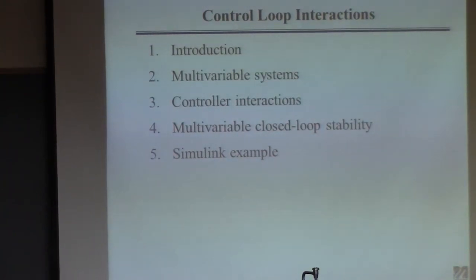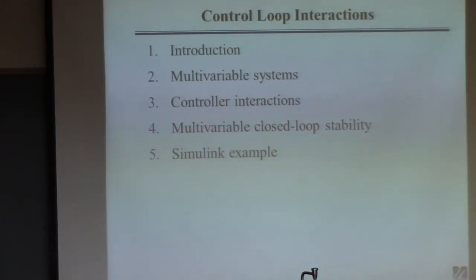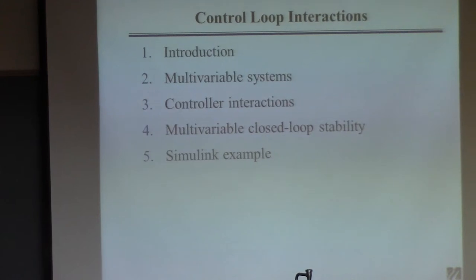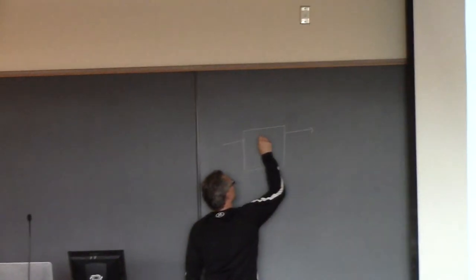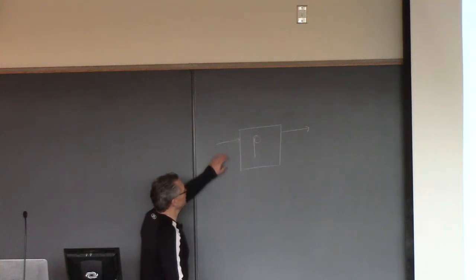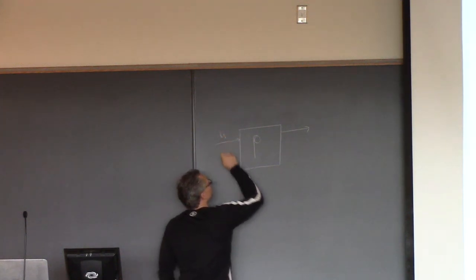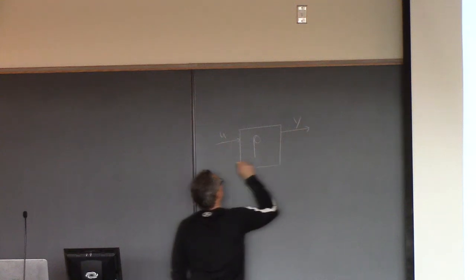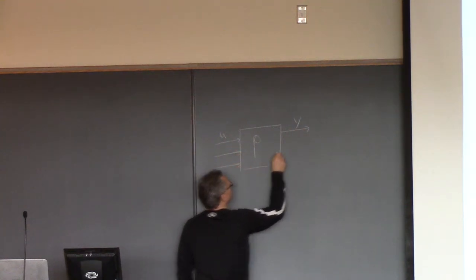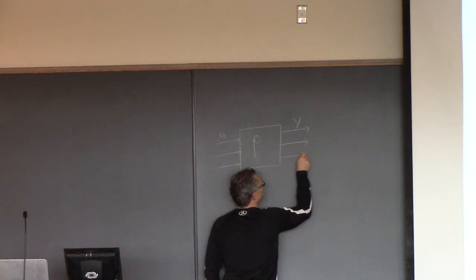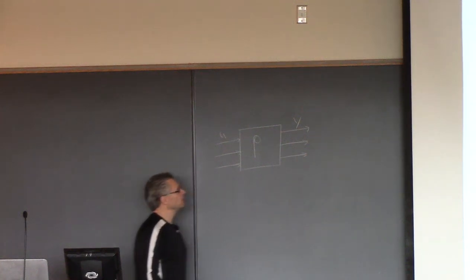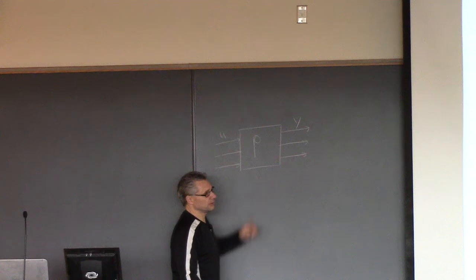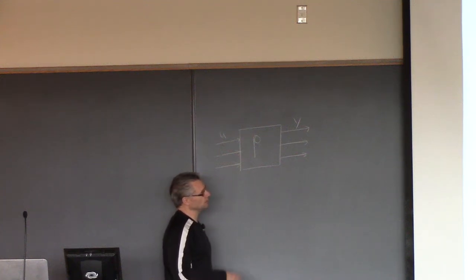The last three lectures are on multivariable systems. The idea here is that instead of having a single input U and a single output Y for our process P, we'll consider the case where we have potentially many inputs and many outputs. We want to figure out how to use these inputs to control these outputs. It's the same thing we've been talking about, just at a bigger scale.